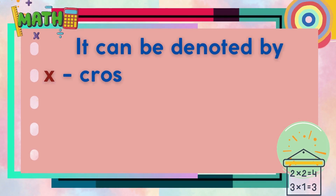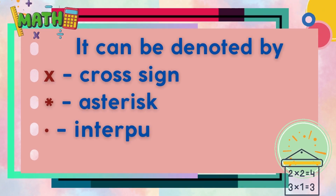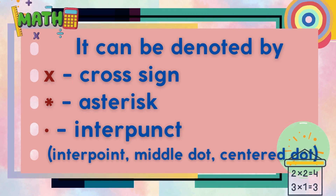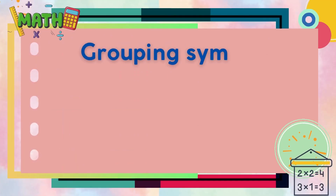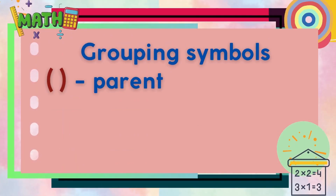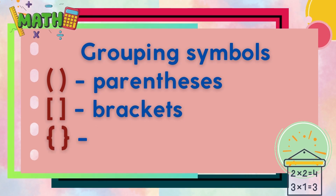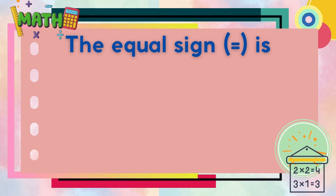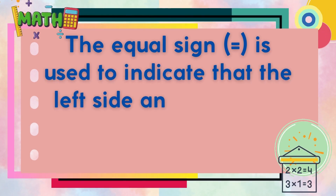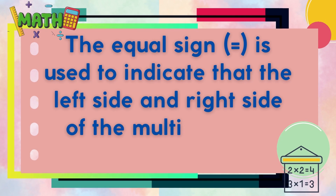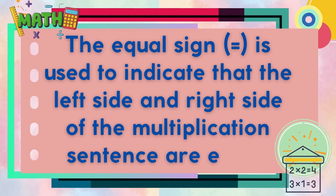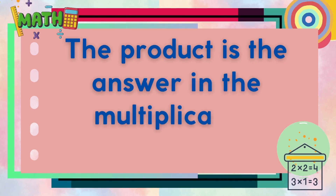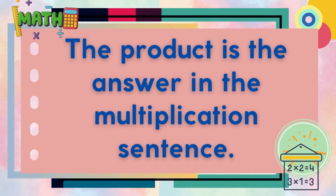The multiplication sign can be denoted by a cross sign, asterisk, or interpunct (also known as interpoint, middle dot, or center dot). Grouping symbols like parentheses, brackets, or braces are also used to denote multiplication. The equal sign indicates that the left and right sides of the multiplication sentence are equal, and the product is the answer in the multiplication sentence.